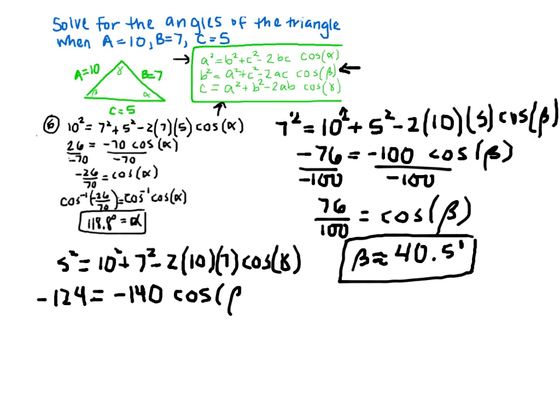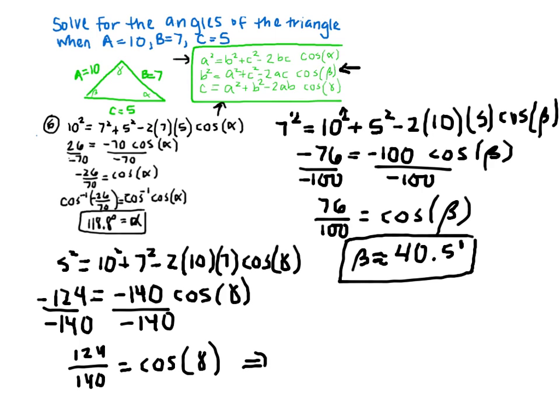Gamma, sorry. Solving for gamma, we divide by negative 140 on both sides. So 124 divided by 140 equals cosine gamma. Taking the inverse cosine of both sides, we find that gamma is roughly 27.7 degrees.